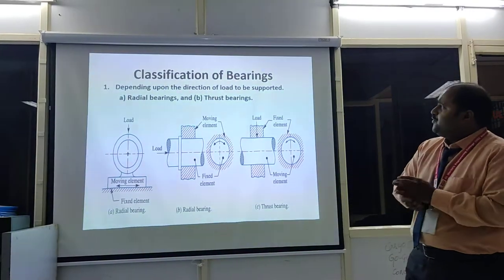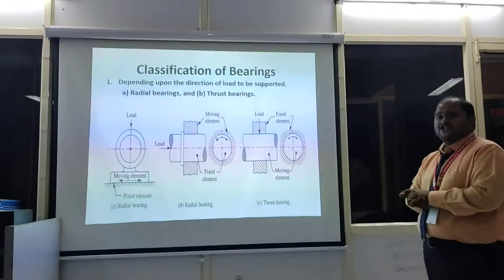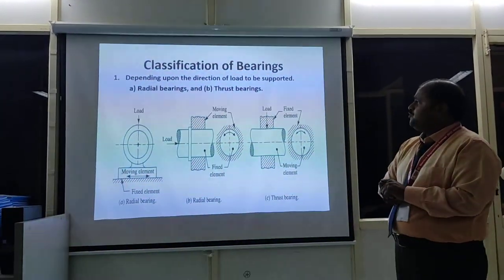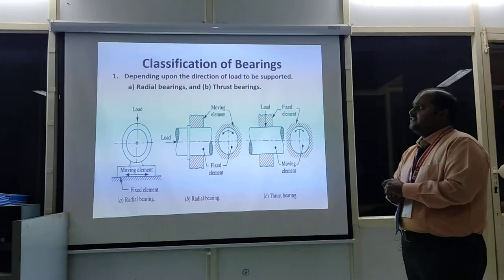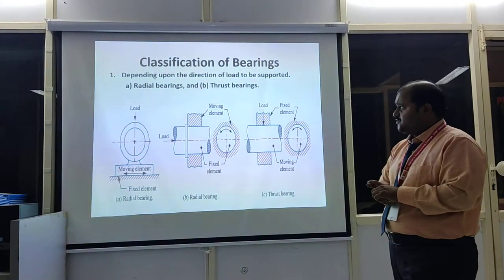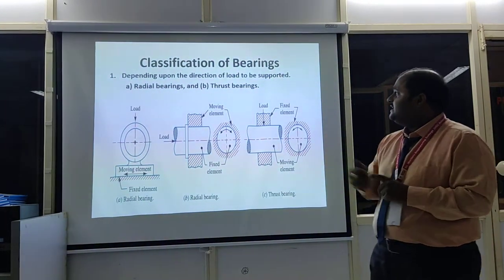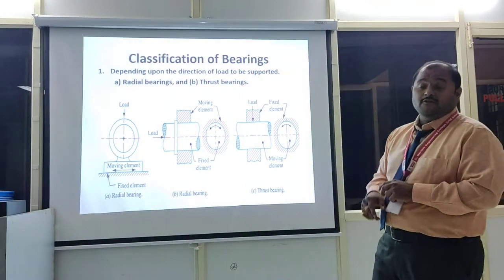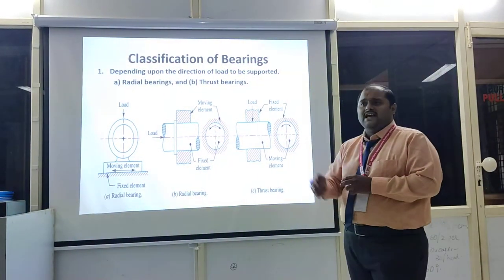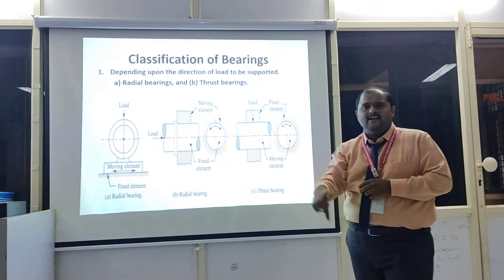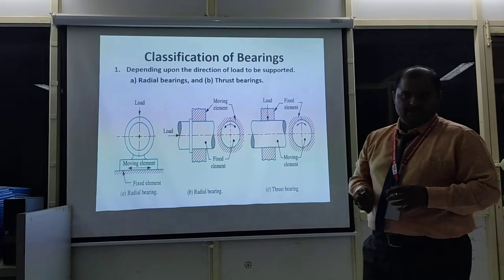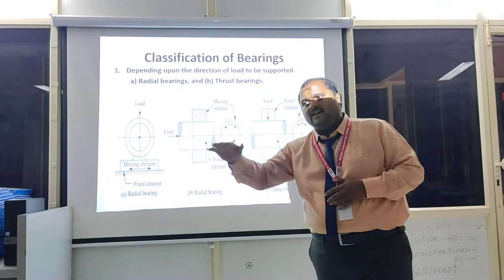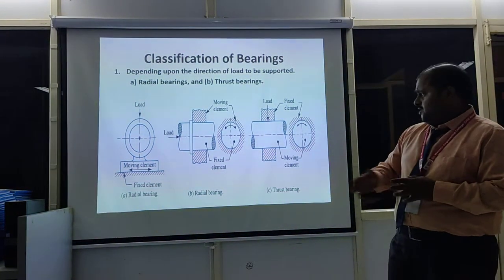Coming to the classification of bearings: depending upon the direction of the load to be supported, there are two types — radial bearing and thrust bearing. When the load is acting radially, we call it a radial bearing. When the load is acting axially, we call it a thrust bearing.